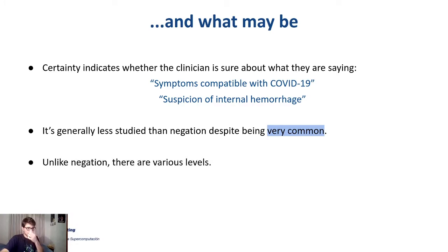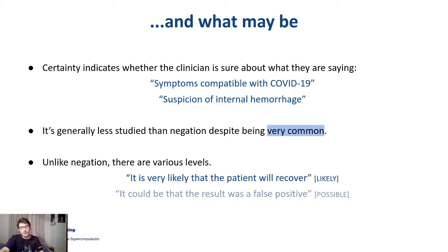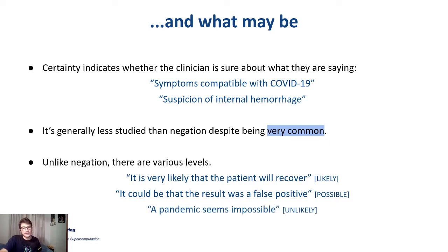Unlike negation, there are various levels or possibilities in which uncertainty can happen. Something can be likely, like 'it's very likely that the patient will recover.' Or something can be possible, like 'it could be that the result was a false positive.' And something can be unlikely, like what we used to say a year ago — that a pandemic seems impossible.